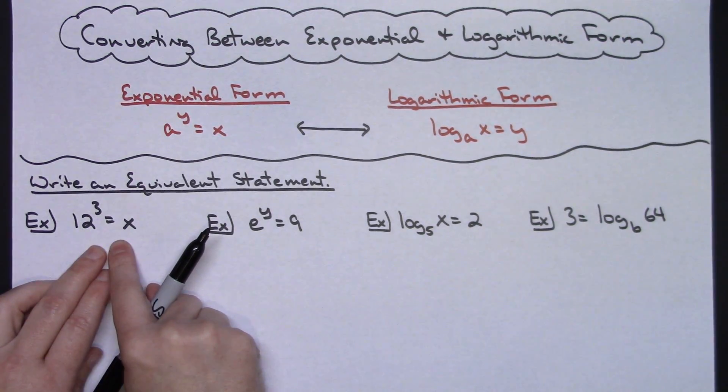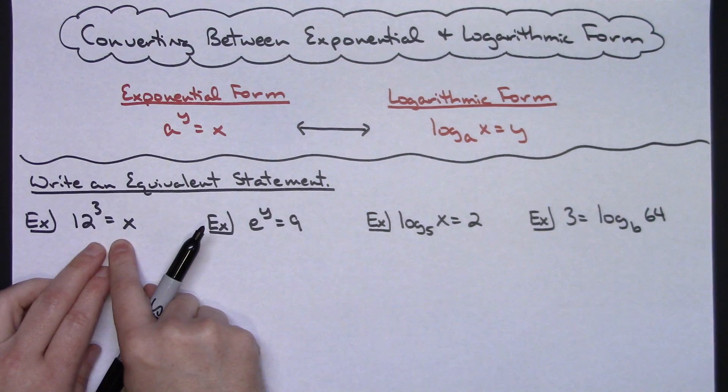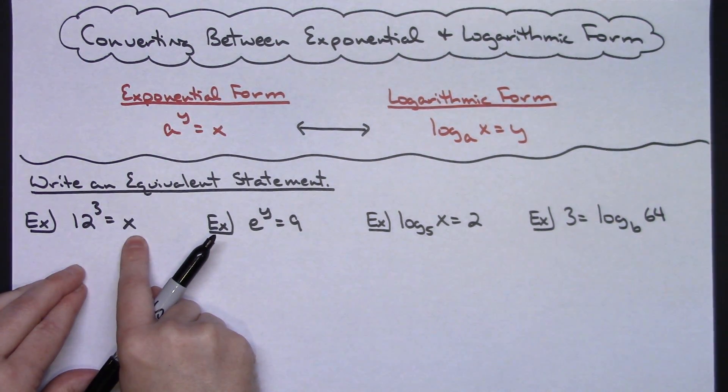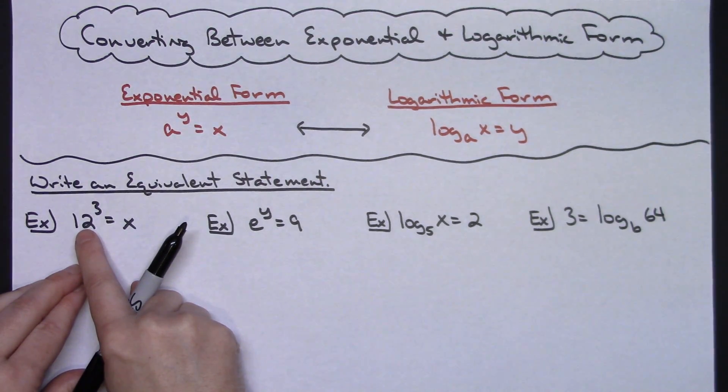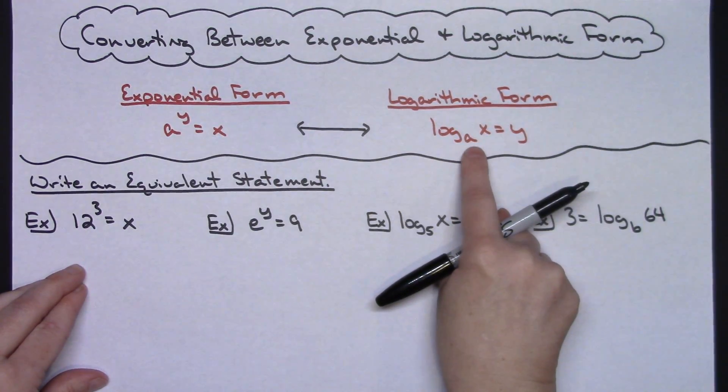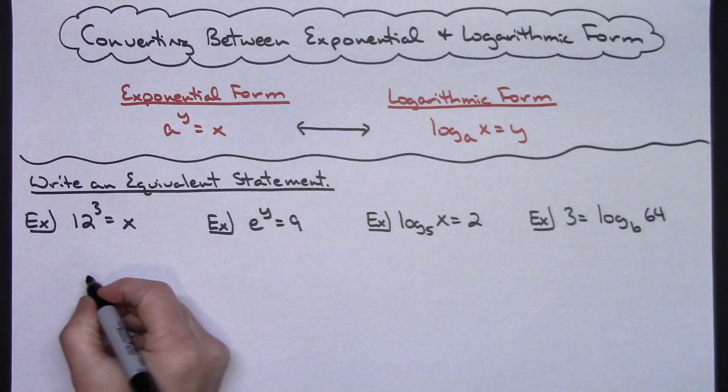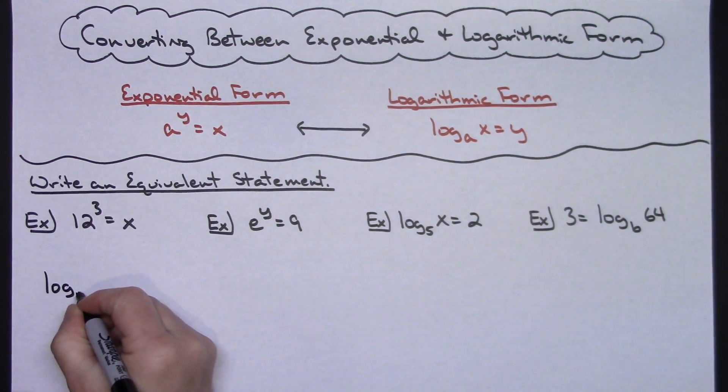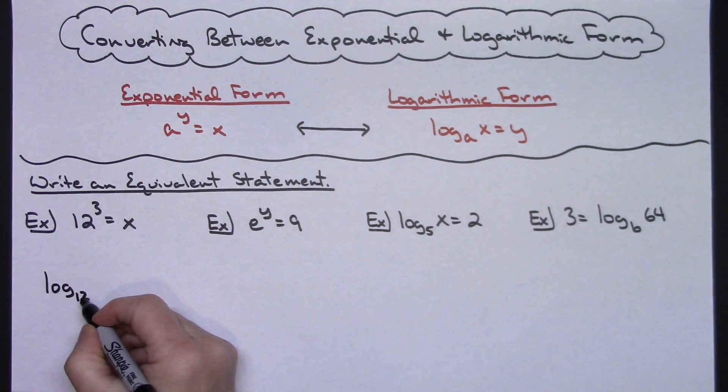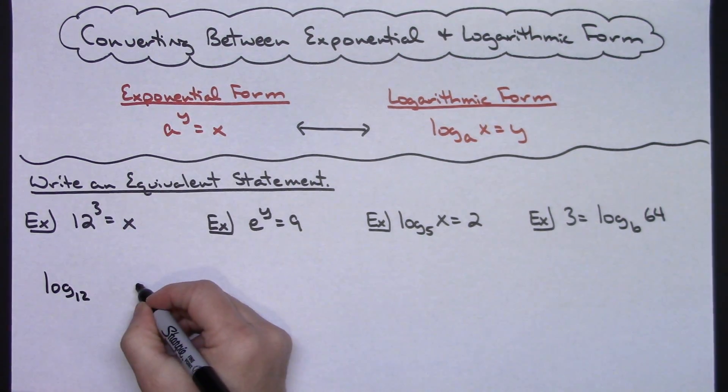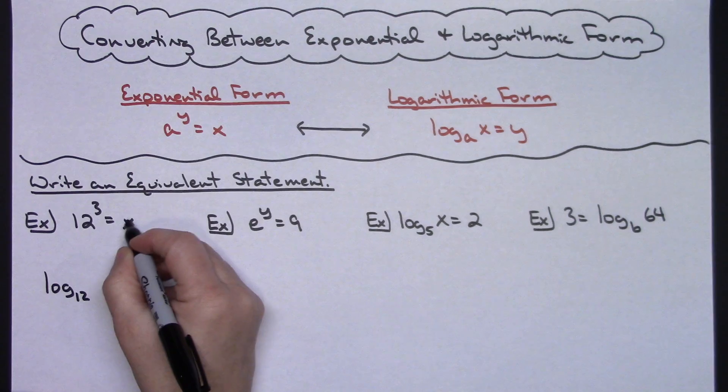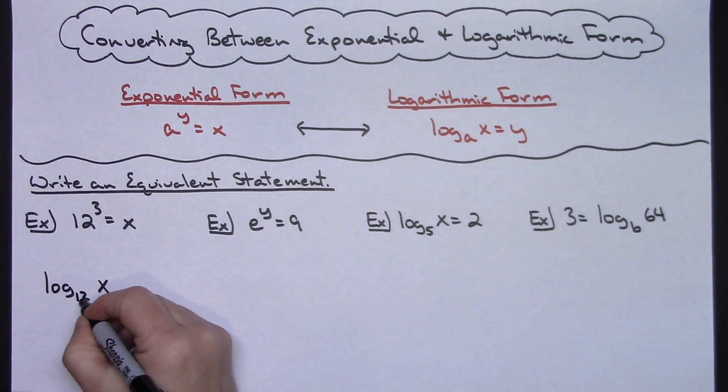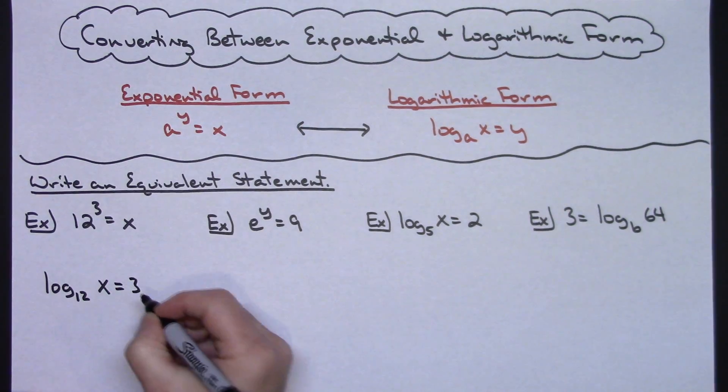In this first one, I can look at this and I can see this is exponential form. So the base is 12, 12 raised to the third power equals x. So I'm going to make sure that my 12 is my base when I go to logarithmic form. So I'm going to go to log base 12. And then the exponent has to be what it's equal to. What I'm taking the log of is the answer of that exponential form. So then it would be log of x base 12 is equal to 3.